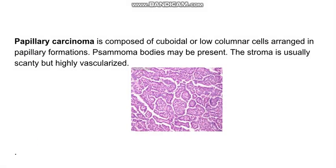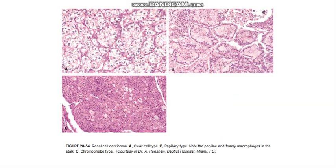Going to the papillary carcinoma — you can see there are numerous papillae with a central blood vessel, so it is a true papillae. Psammoma bodies can be present and the stroma is highly vascularised. The chromophobe cell variant has a very eosinophilic appearance. You can see the difference between the chromophobe cell variety and the clear cell variety — in clear cell, it is present in tubules and has a clear cytoplasm.